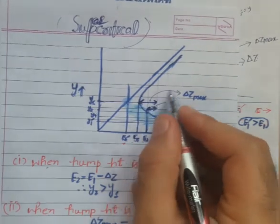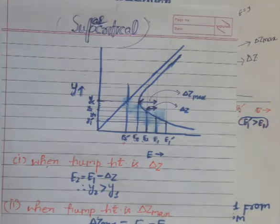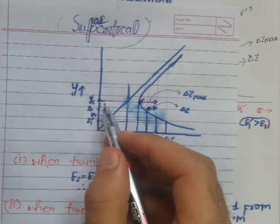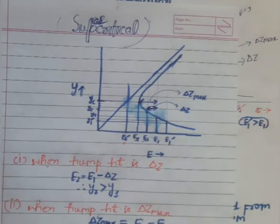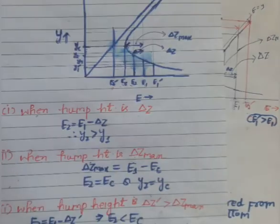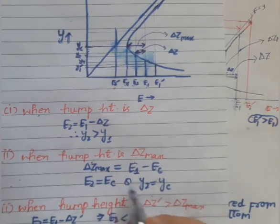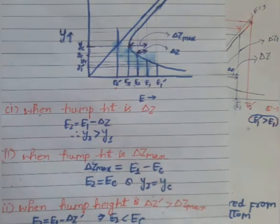At this condition, critical depth is attained at the downstream section and the flow becomes critical. y2 moves to yc, meaning the depth of flow has increased. Therefore, ΔZ_max = e1 − ec, and e2 = ec = (3/2)yc.